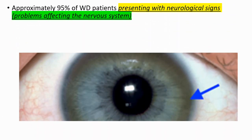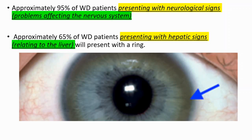Approximately 95% of Wilson disease patients presenting with neurological signs, which means problems affecting the nervous system, and approximately 65% of Wilson disease patients presenting with hepatic signs will present with a ring. It's very common for Wilson disease patients, but it's seen in other diseases as well.